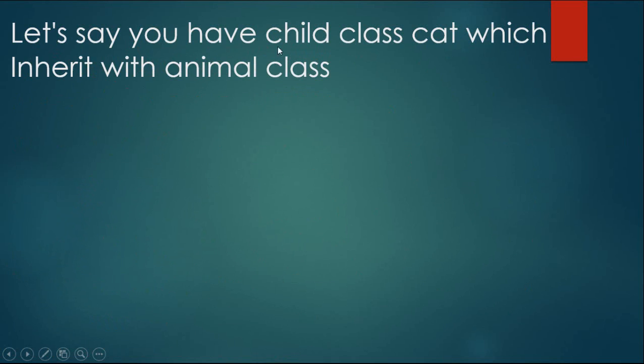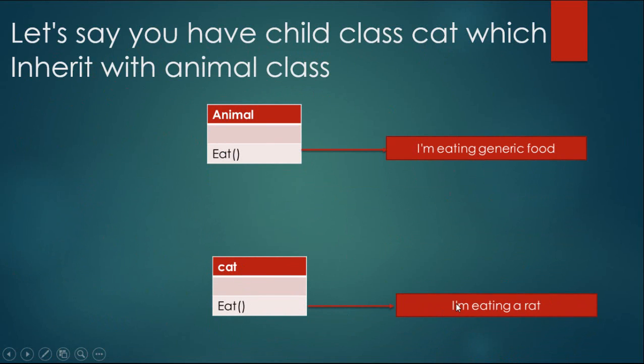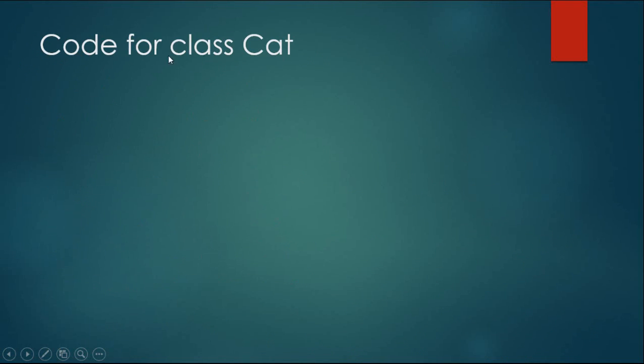Let's say you have a child class cat which inherits from the animal class. Code for class cat.